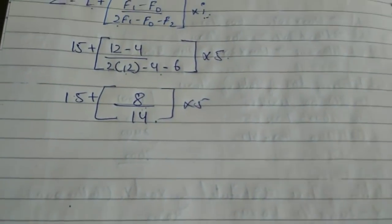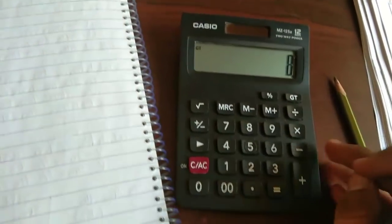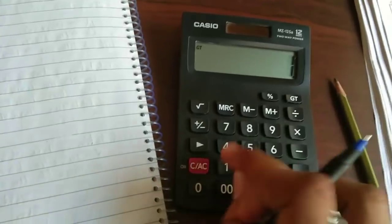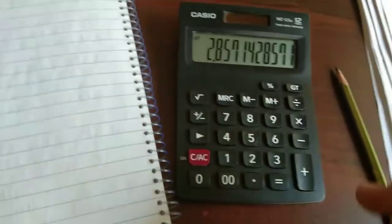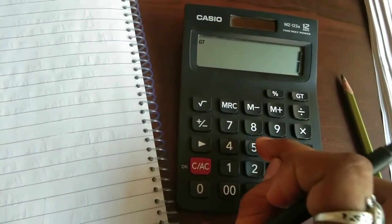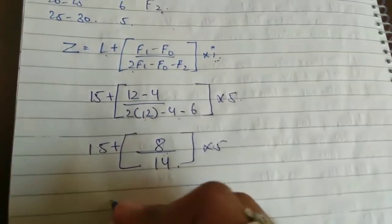So now we will do as we were doing in old sums. See, 8 divided by 14 into 5 plus 15. So 17.85 is answer.